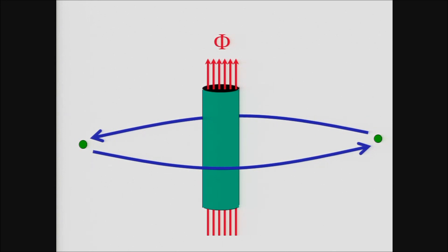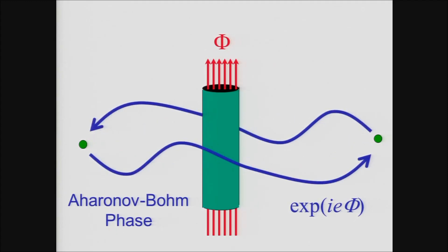And that modification of the electron state is unchanged if I deform the trajectory that the electron followed. All that really matters is a topological property that the electron wrapped once around the flux tube.